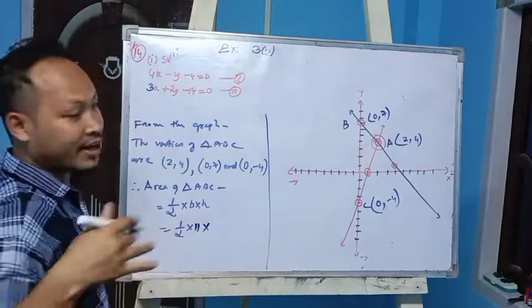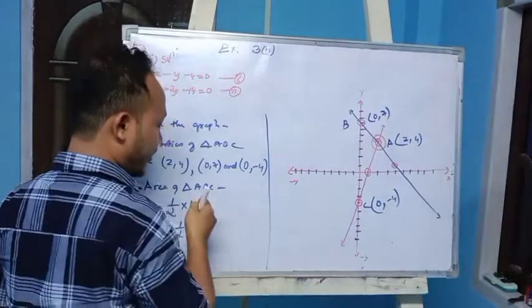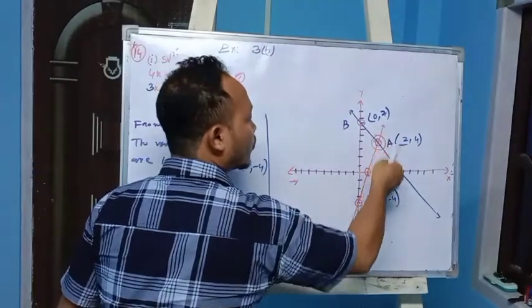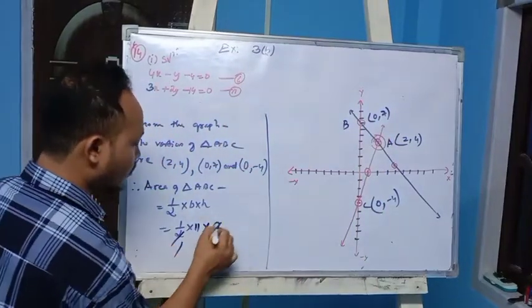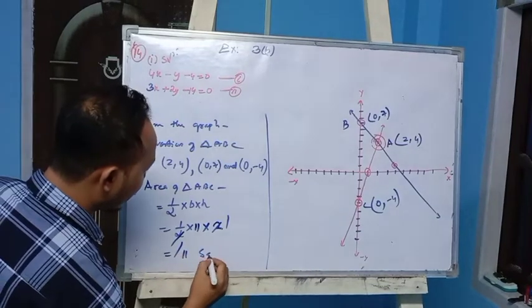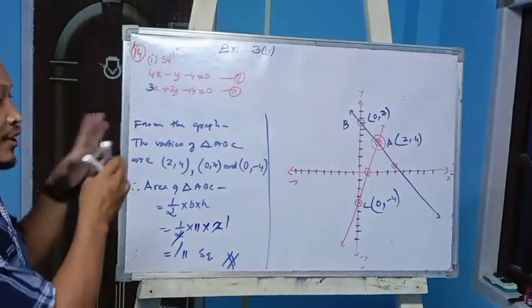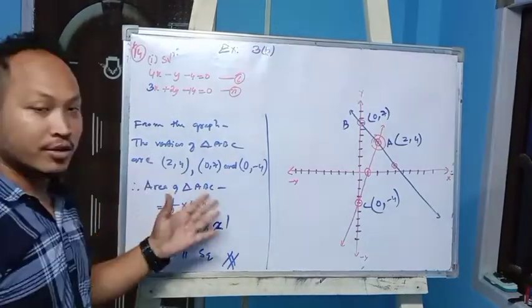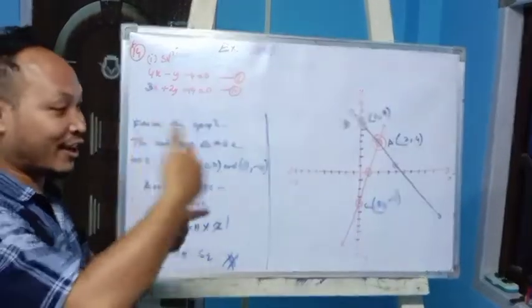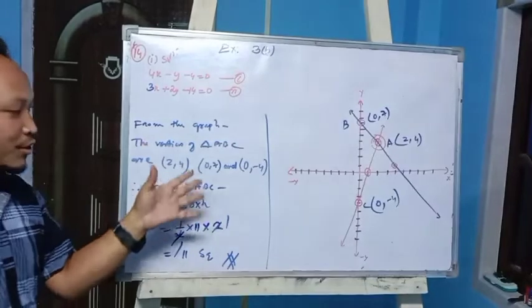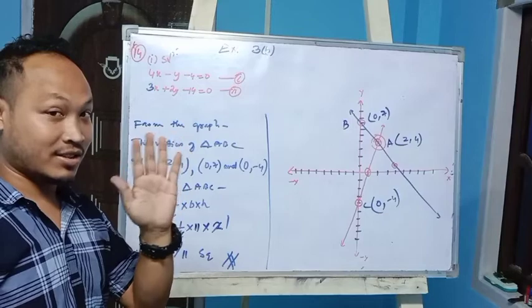The base BC lies along the Y-axis: from y equals 7 to y equals minus 4, so the base is 11 units. The height is the perpendicular distance from A to the Y-axis, which is 2 units. So area equals half times 11 times 2 equals 11 square units. These are the final answers. I hope this is clear. If you have any doubts, you can watch again. Bye bye!